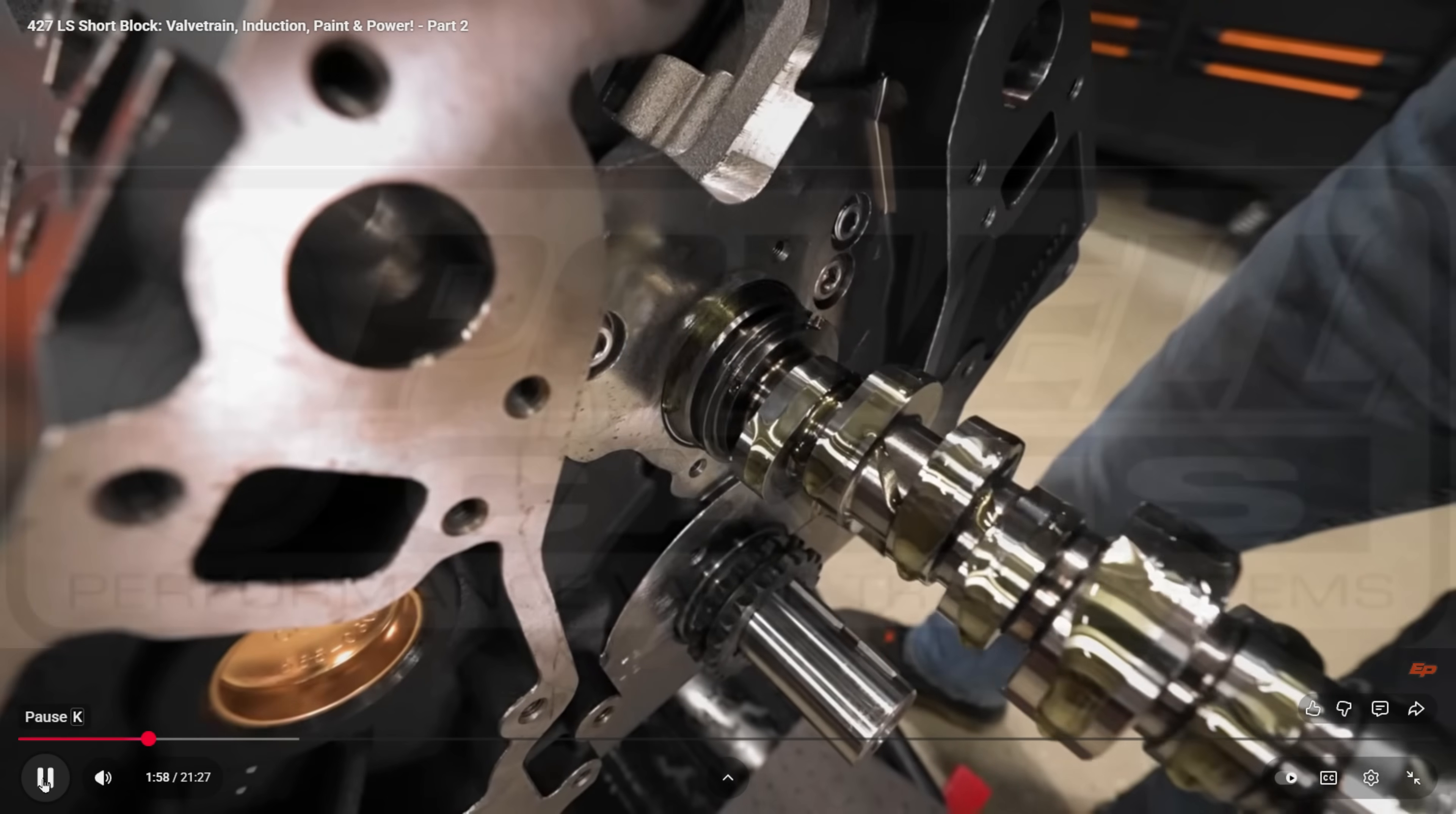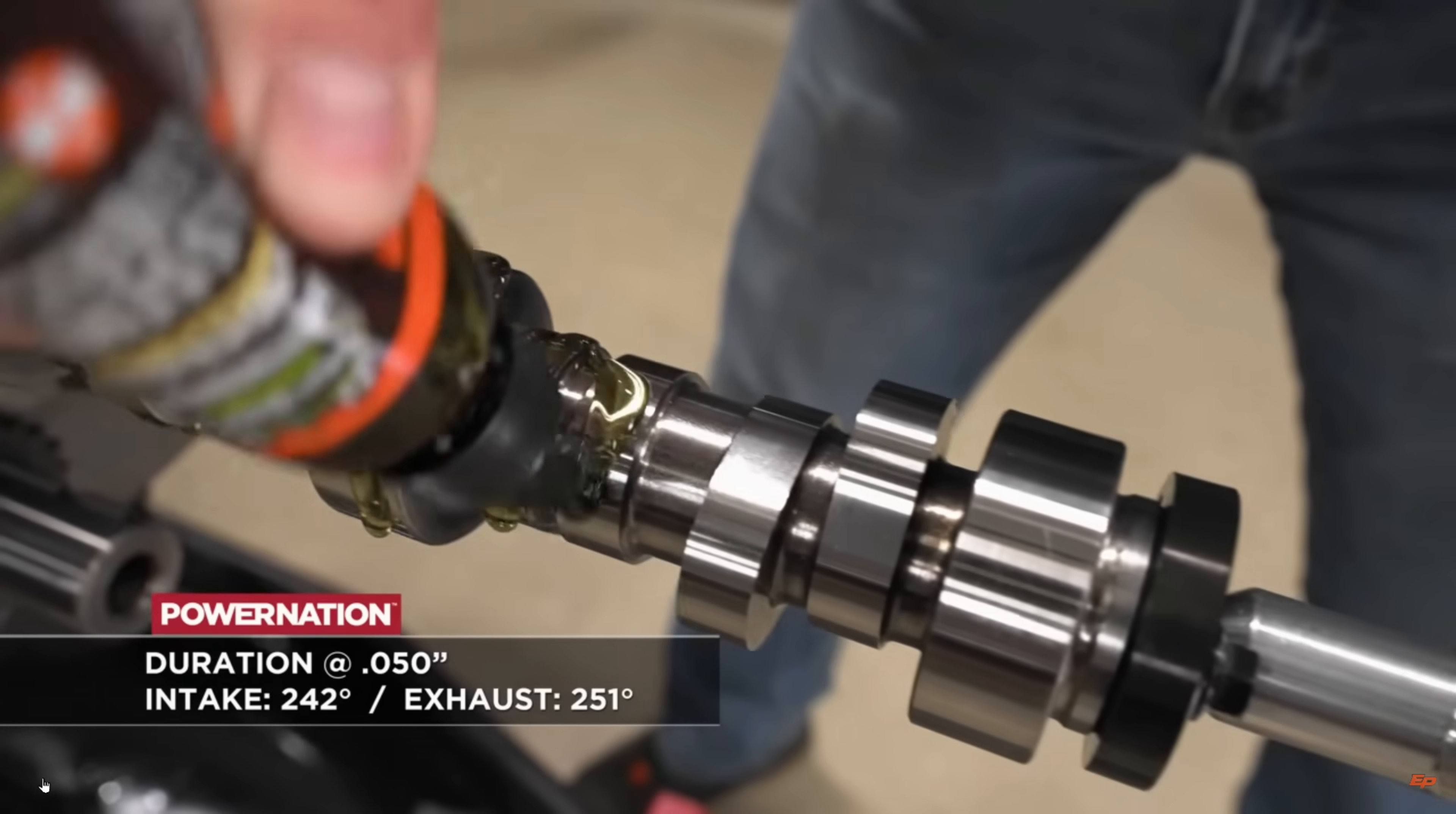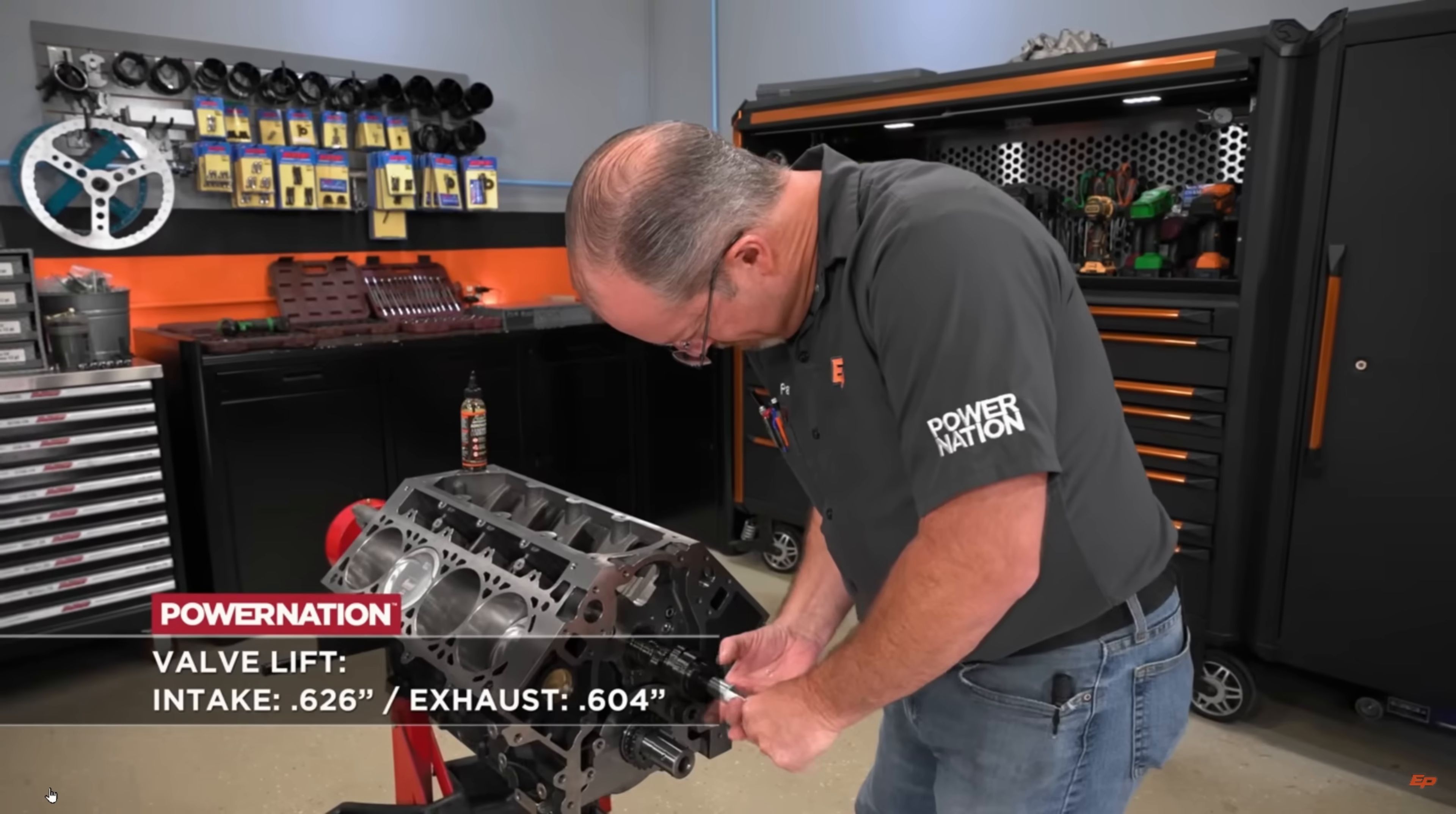For this build, we are trying out one of Summit Racing's big gun hydraulic roller LS camshafts. It has durations at 50 thousandths lift of 242 on the intake and 251 on the exhaust, with a 116 degree lobe separation angle for that creamy smooth idle. Lift at the valve is 626 thousandths on the intake and 600 thousandths on the exhaust.